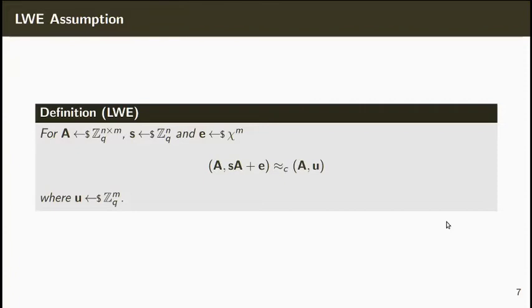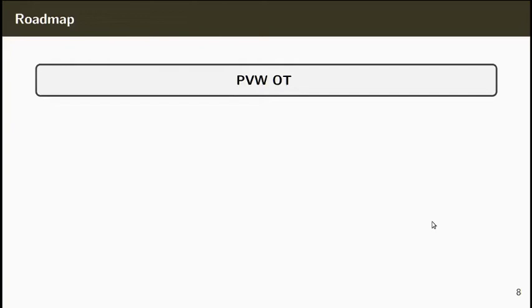Let us first recall the learning with errors assumption. The LWE assumption states that for a random matrix A, a random vector S, and the vector E, which is sampled from an error distribution, the distributions of SA plus E and a random vector are computationally indistinguishable.